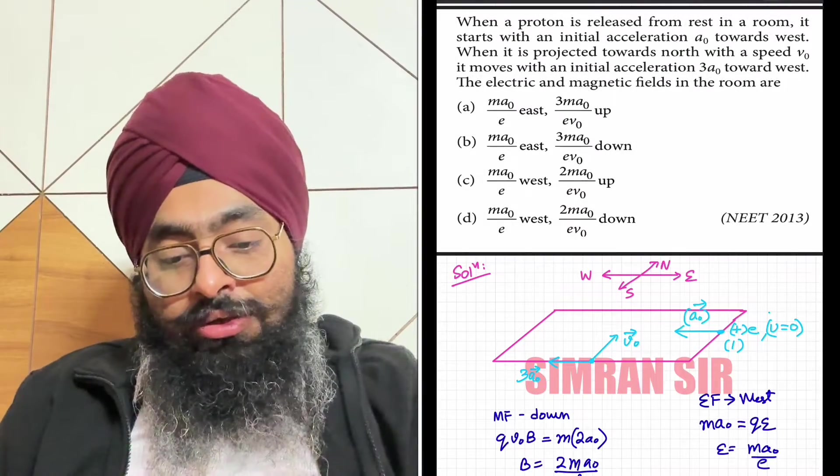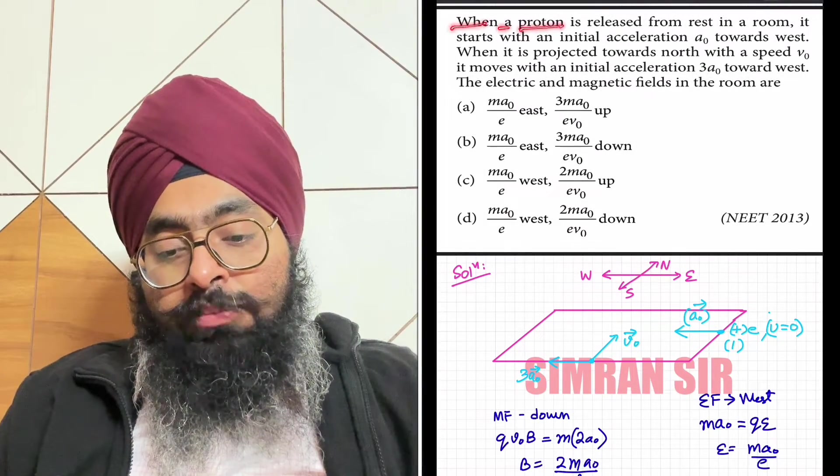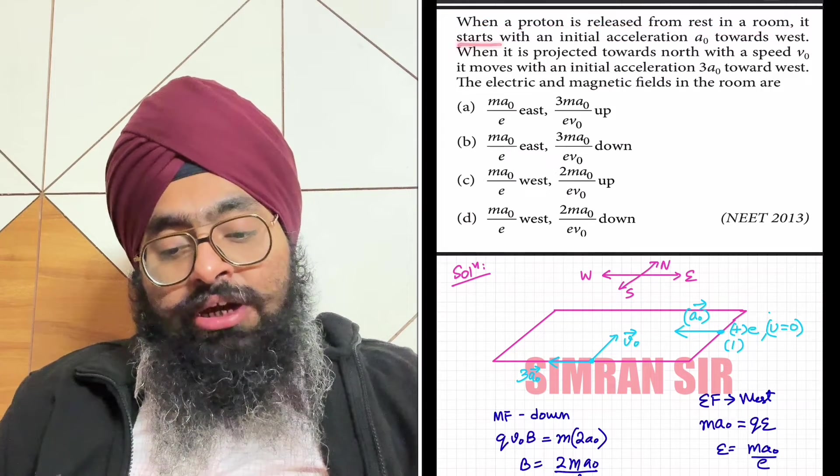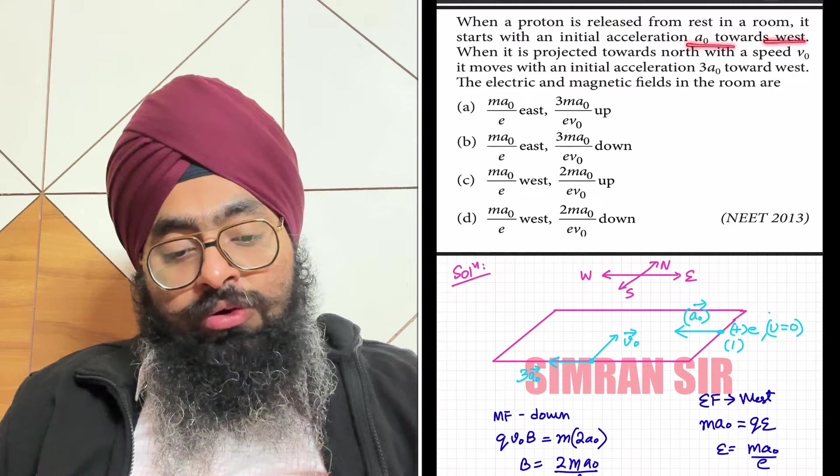Let us do this question. The question is: when a proton is released from rest in a room, it starts with an acceleration a0 towards west.